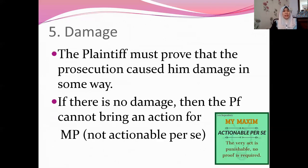The fifth and last element to be proved for an action for malicious prosecution is damage — meaning losses or injury suffered by the plaintiff. The plaintiff must prove that the prosecution caused him damage in some way. Even if he has proved the first four elements, if there is no evidence of damage, he still cannot bring an action for malicious prosecution. If there is no damage, the action is not actionable per se — you have to prove elements of damage.